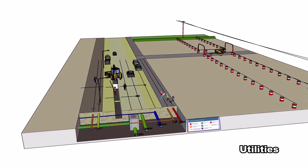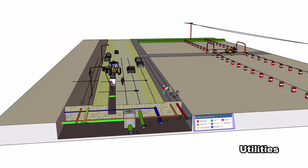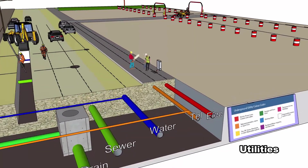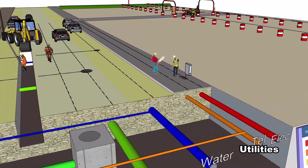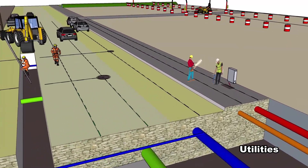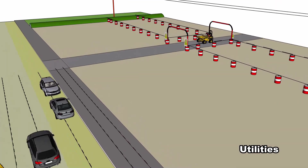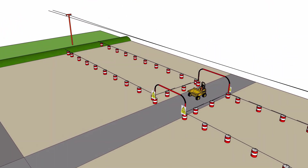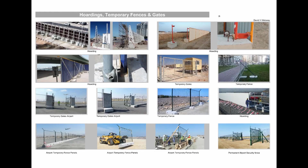Preliminary works. Divert roads, footpaths, underground and overhead utilities outside the area of the proposed site. Fence and gates to make the site secure.